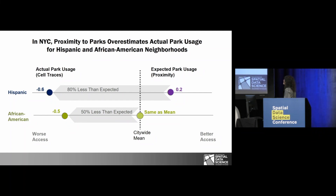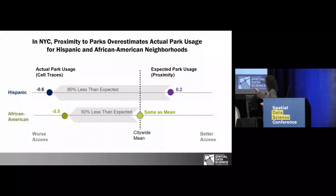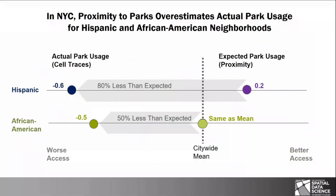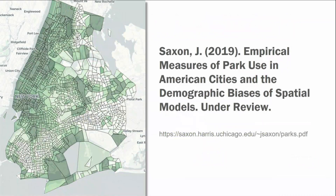People from these neighborhoods were using parks far less frequently than was assumed if you just looked at proximity to parks alone. Looking at tracts in New York City, in more Hispanic neighborhoods the usage of parks is 80% less than expected based on proximity compared to the benchmark, and it's 50% less for African-American neighborhoods. This paper goes into the details for the 20 largest cities in the U.S.